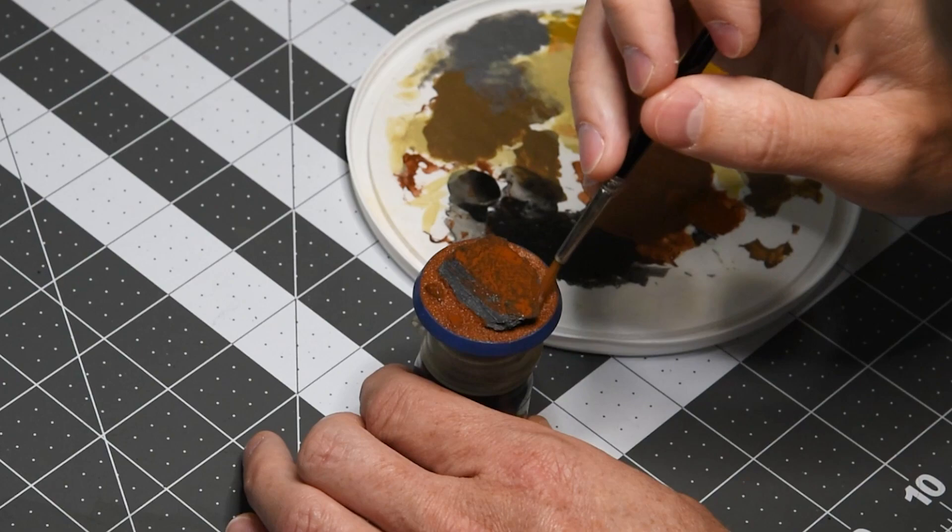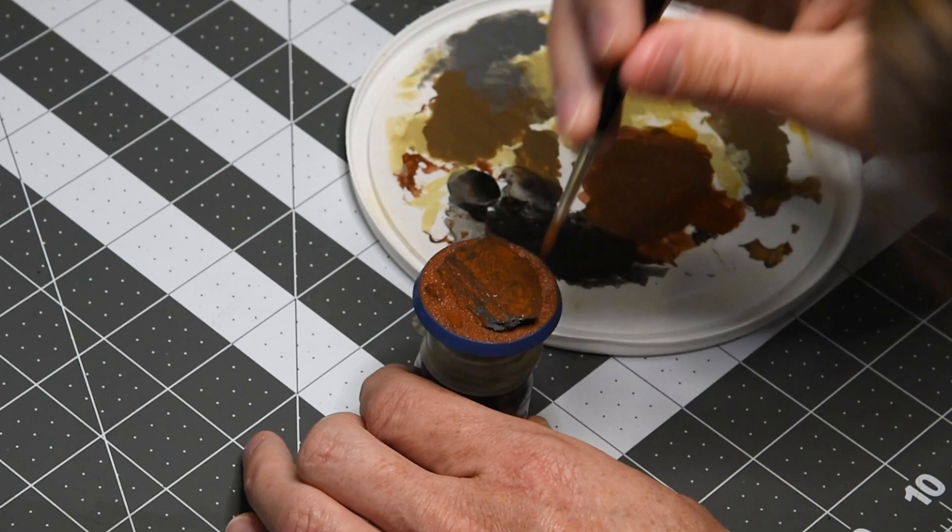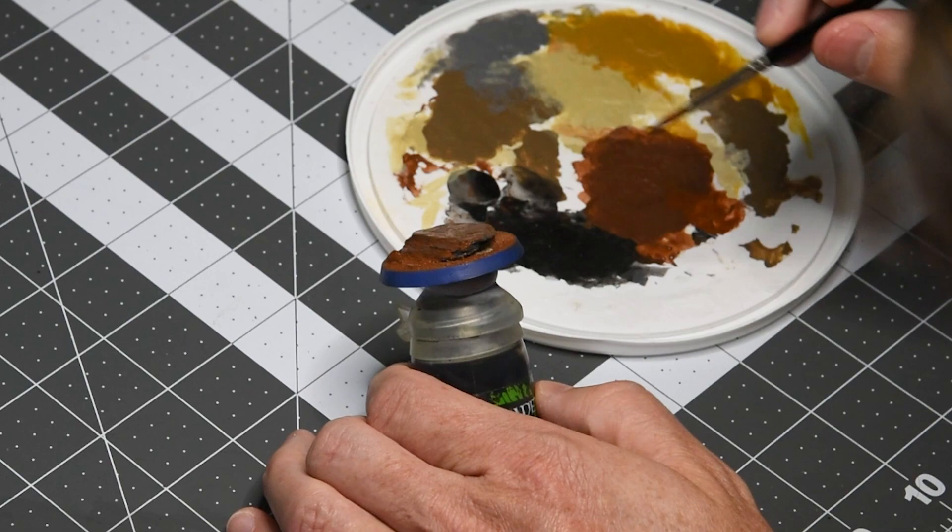The super glue actually adheres extremely well to slate. If you're trying to pop it off it'll take off a good chunk of the rock with it so I like to paint it first and then apply the miniature afterwards.